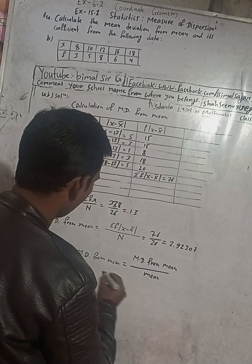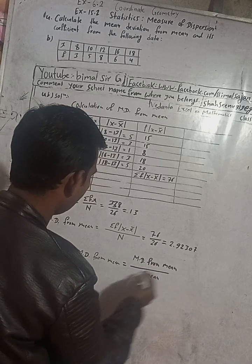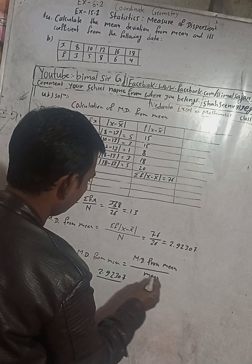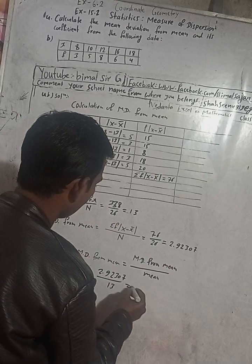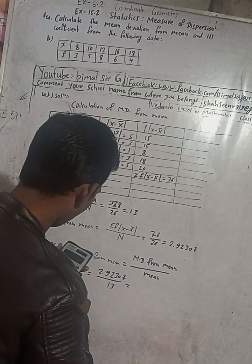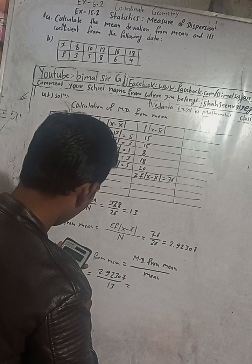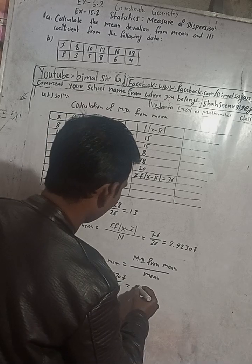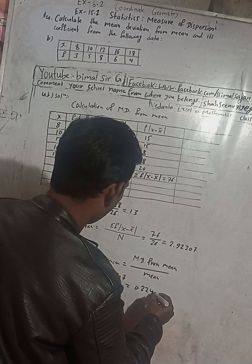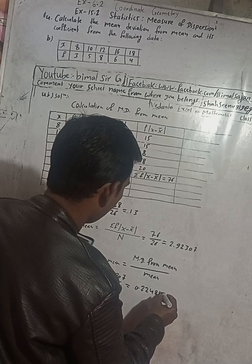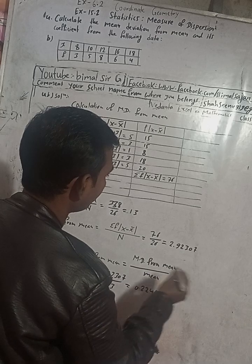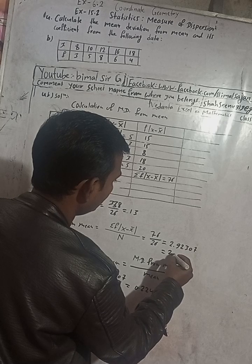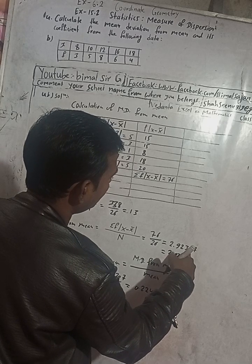So the mean deviation from mean is 2.92307. Now for the coefficient of mean deviation, the formula is: mean deviation from mean divided by mean. Mean deviation is 2.92307 and mean is 13. Dividing gives 0.2285. Rounded to three digits, the mean deviation is 2.923.